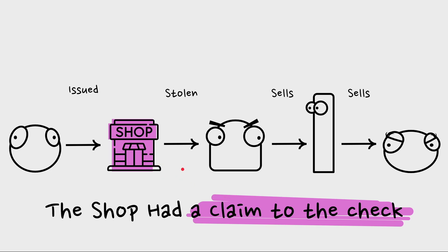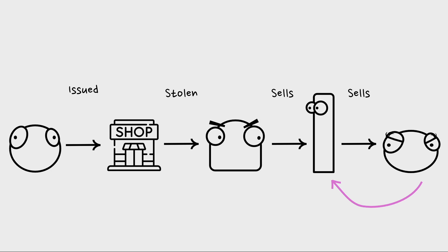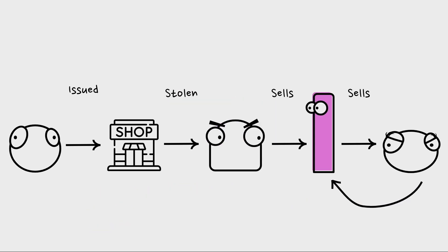There's also the claim issue: since it's stolen, the shop can say 'that's our check, we own it.' So the warranty is violated in multiple ways — both Bo and Herman warranted there was no claim on the instrument, but there is because it was stolen. As for who likely bears the loss: Barb would most likely sue her immediate transferor Herman, and Herman would turn around and sue Bo. If Bo is judgment proof — which someone who steals checks and forges signatures might well be — Herman is stuck with the loss.